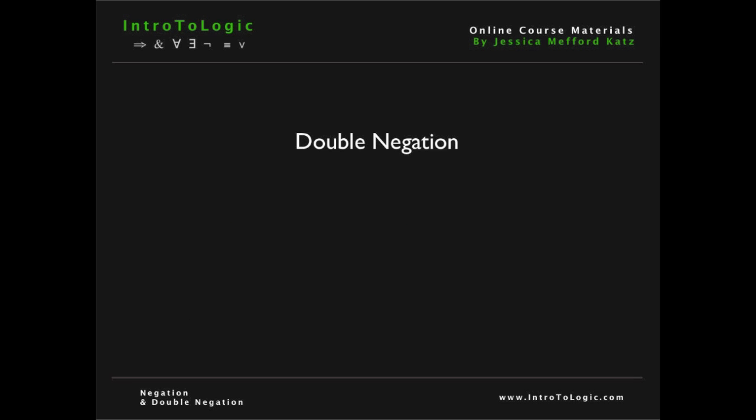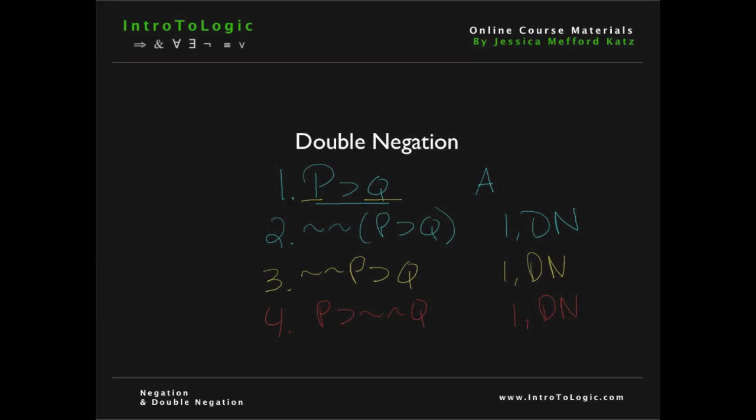Double negation gets a little bit trickier when we face conditionals. Consider the conditional IF P THEN Q as our first assumption. According to double negation, we can either negate or double negate the whole sentence, the whole conditional, and get NOT NOT IF P THEN Q from line 1 DN. But similarly, we can also just double negate one of the sentential components of the first premise or the conditional. So this is a little bit trickier than our regular or simple sentences that we just looked at, but it's not too difficult once you get the hang of it.